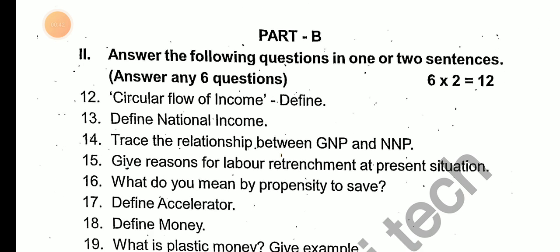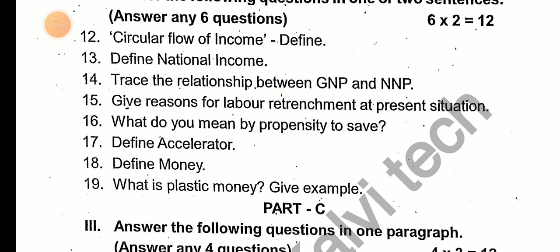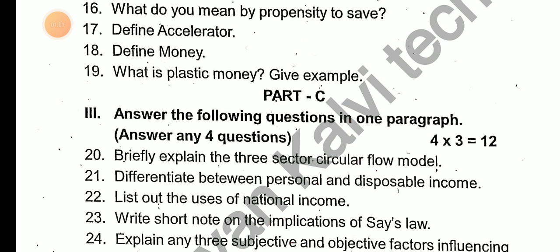In this section, we will find: the circular flow of income, define national income, trace the relationship between GNP and NNP, give the reason for the labor's present situation, what do you mean by propensity to save, define accelerator, define money, what is plastic money — give an example. 4 into 3 marks.